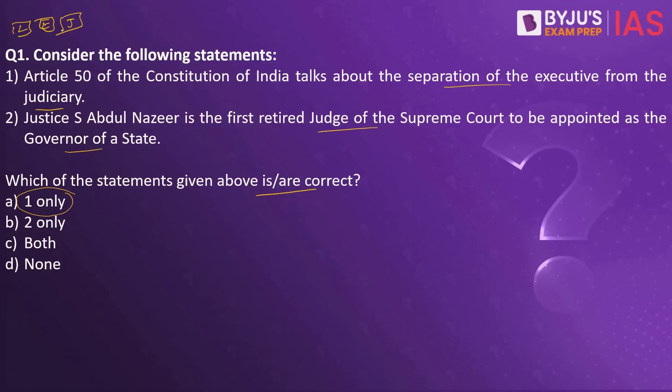So the first statement is right: Article 50 of the Constitution of India talks about separation of the executive from the judiciary. When you look into the second statement, Justice S. Abdul Nazir is the first retired judge of the Supreme Court to be appointed as a governor — this statement is wrong, because we have had previous judges and chief justices also appointed as governors.